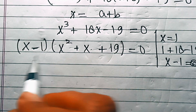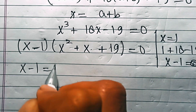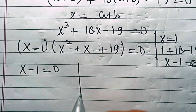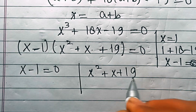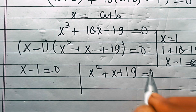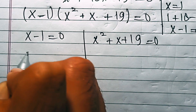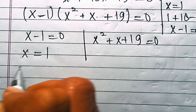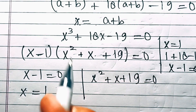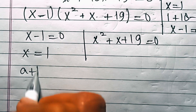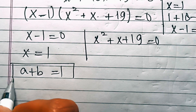The product of these two factors equals 0, so either x minus 1 equals 0 or x² + x + 19 equals 0. From the first factor, x equals 1, and since x equals (a+b), we get a + b equals 1. This is the first solution.